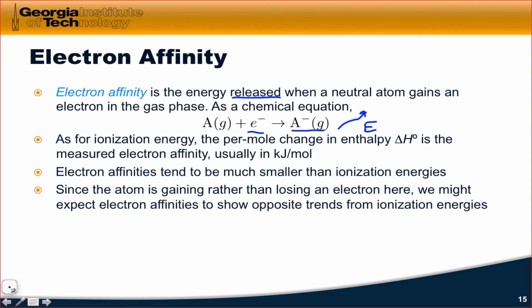In rare cases, the positive charge in the nucleus is completely shielded by existing electrons in the atom, and so electron affinity is actually positive. But for the most part, we'll see electron affinities that are less than zero — there's energy released when an electron is added to the atom.